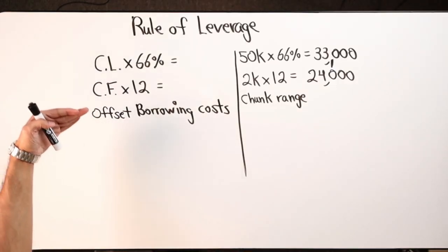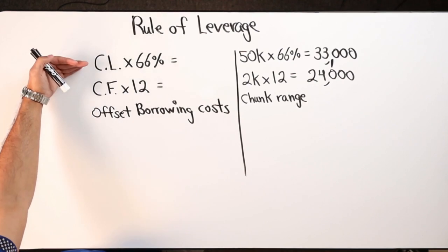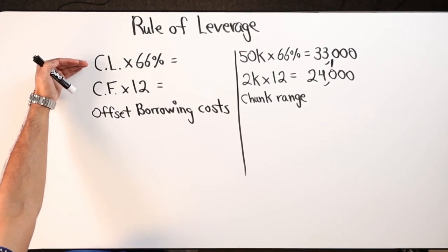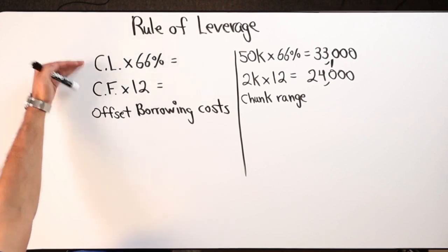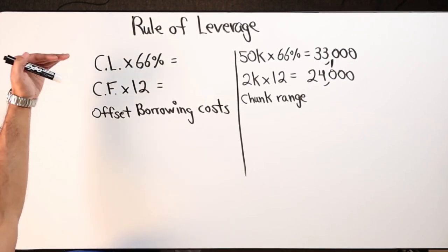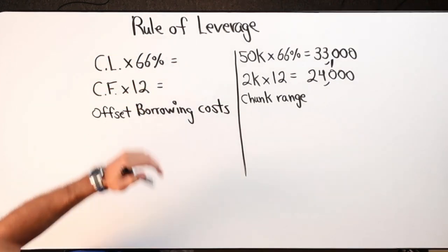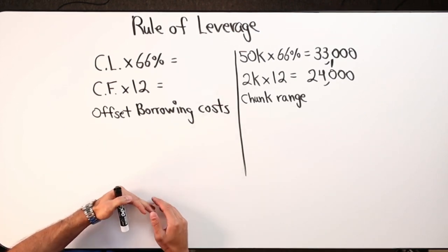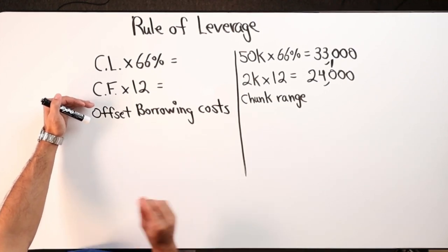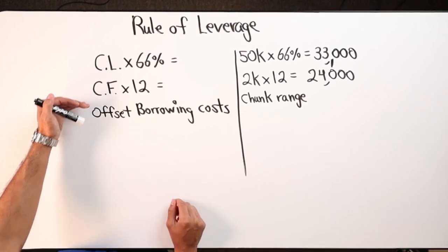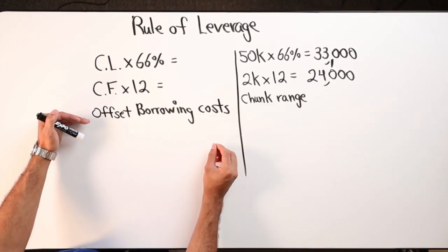You'll constantly hear me talk about leveraging and determining your chunk amount based on the credit limit of your debt tool — whether it's a credit card, personal line of credit, business line of credit, HELOC in first or second position, all-in-one loan, cash value life insurance policy, IUL, or premium financing. Whatever your available credit limit is, I multiply that by 66%, which lowers the number and gives me a range. I then look at your conservative monthly cash flow times 12. Whatever I borrow, I want to be able to offset the borrowing costs.